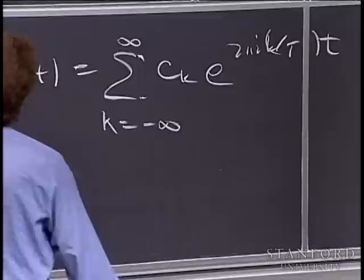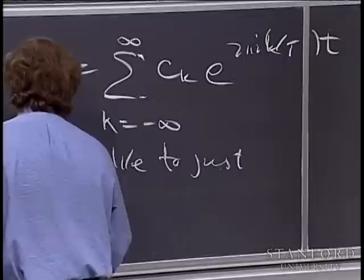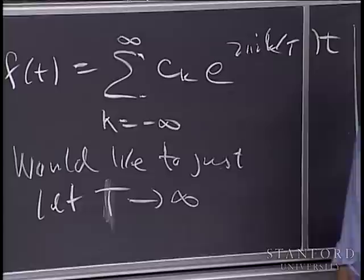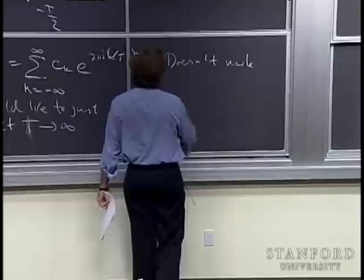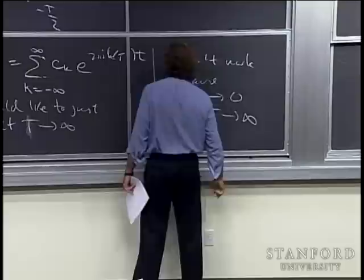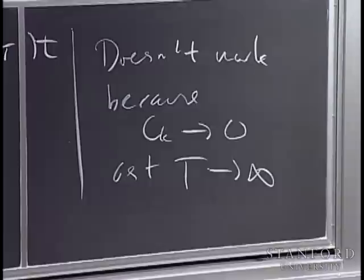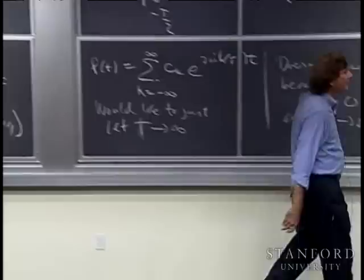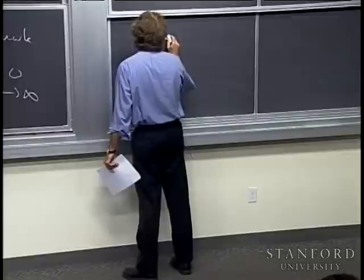You would like to just let T tend to infinity, but that doesn't quite work — it doesn't work because C_k tends to zero as T tends to infinity. It tends to zero like 1 over T. Because of that factor 1 over T in front, the integral is bounded if the function is fixed and non-zero only on some finite interval. So you scale up by T.